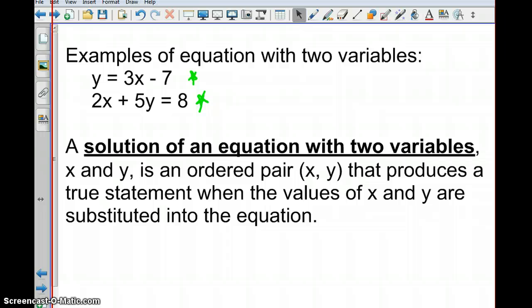So the first thing we're going to talk about is the idea of what a solution of an equation that contains two variables is. Basically a solution of an equation with two variables, x and y, is an ordered pair. That ordered pair produces a true statement when the values of x and y are substituted into the equation. This is similar to when you were solving equations with one variable. When you got the solution, you were able to plug that solution back into the equation, and it would make a true statement. The same is true here, we just have two different variables.